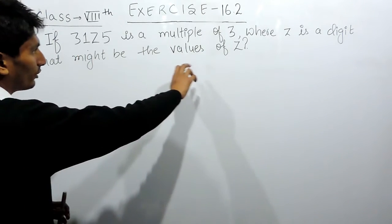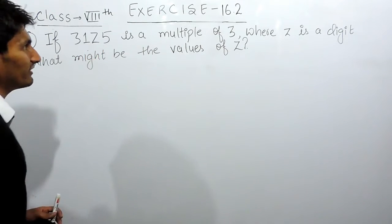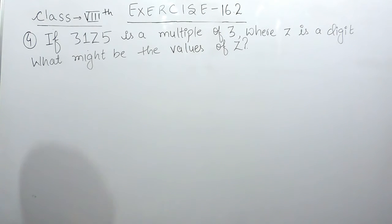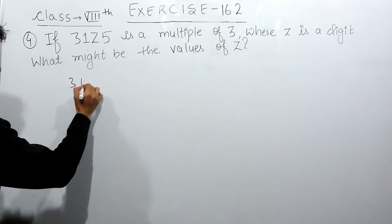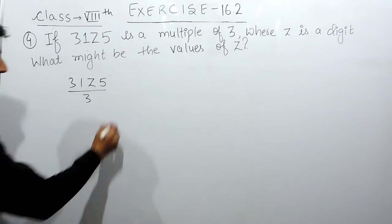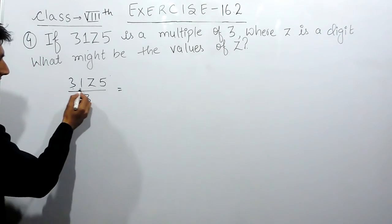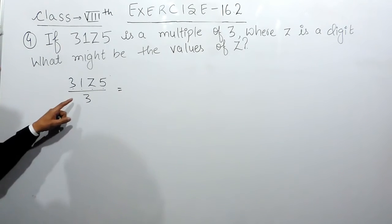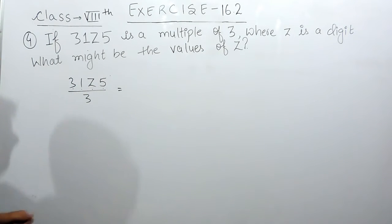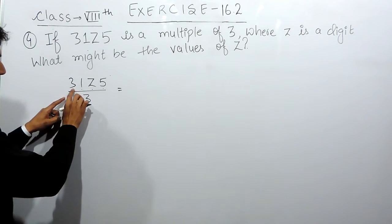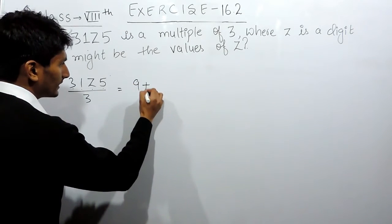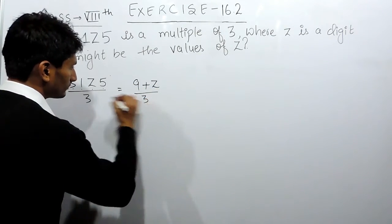This is a multiple of 3 means this complete number must be divisible by 3 completely. Now, according to the divisibility rule of 3, if I have any number and I have to check whether it is divisible by 3, I have to add the digits in this number, and if the sum of these digits is divisible by 3, then this complete number must also be divisible by 3. So, if I add: 3 plus 1 is 4, plus 5 is 9. So the sum will become 9 plus z.